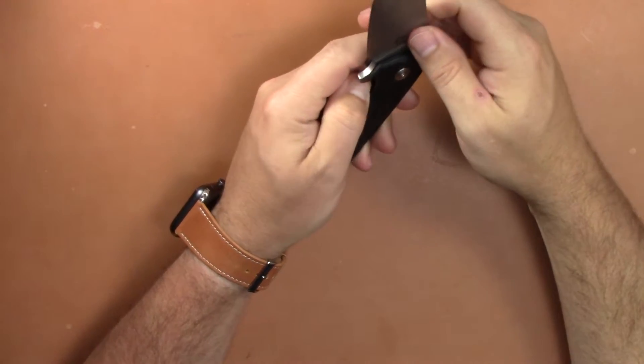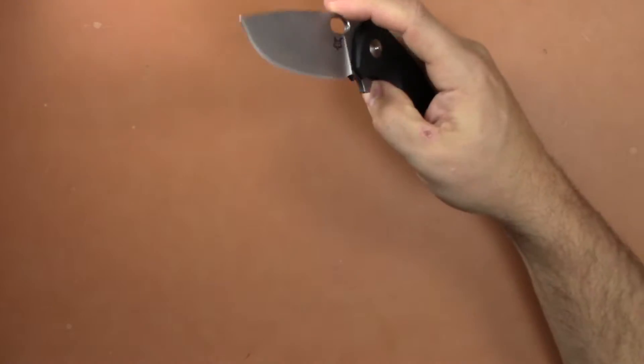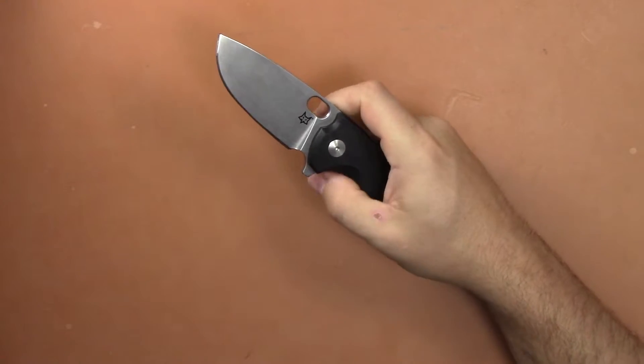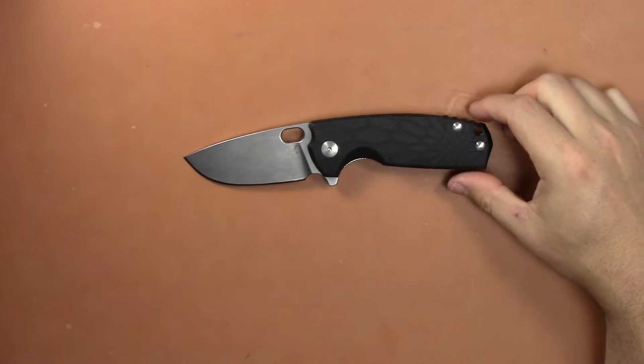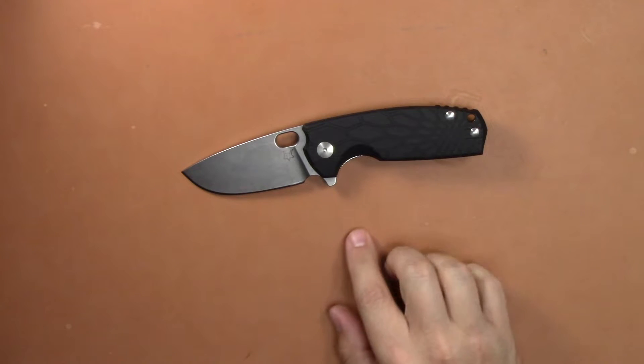Let's get into what I like. I like the stonewash finish on the blade, I love the deployment, it is very smooth any way you do it, the detent is dialed in for multiple methods of opening, that's not usually easy to do. I think it's a good looking knife. I like this cryptic pattern on the FRN, I like that it's a little different.